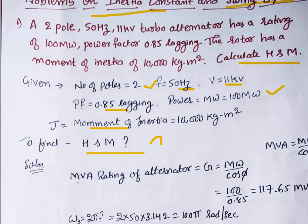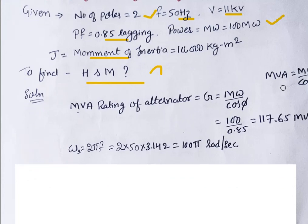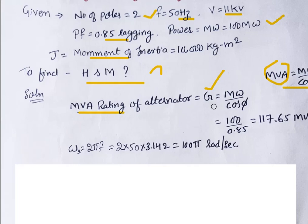We know from the basic equation that MVA equals MW divided by cos phi. This is the basic relationship between power factor, apparent power, and real power. G is the MVA rating — the 3-phase MVA rating of the alternator. So G equals MW divided by cos phi, which is 100 divided by 0.85, giving us 117.65 MVA.